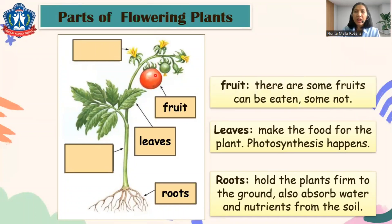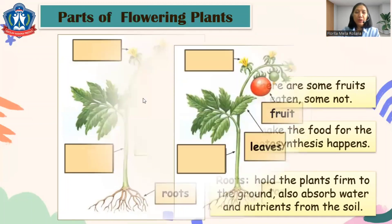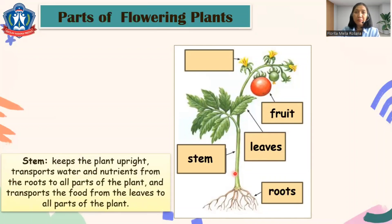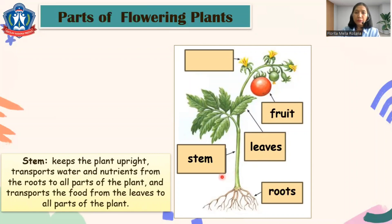We also have another part — that's the stem. The stem keeps the plant upright and also transports water and nutrition from the roots to all the parts of the plant, and also transports the food from the leaves to the whole plant.